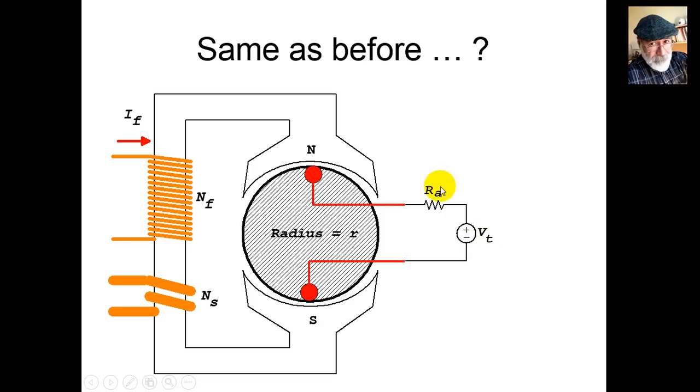We pull out the wires on the top of that coil and connect them to an external battery Vt. Ra represents the total resistance of the entire circuit. A current will flow, Ia, and that current goes into the screen at the top and out of the screen at the bottom.